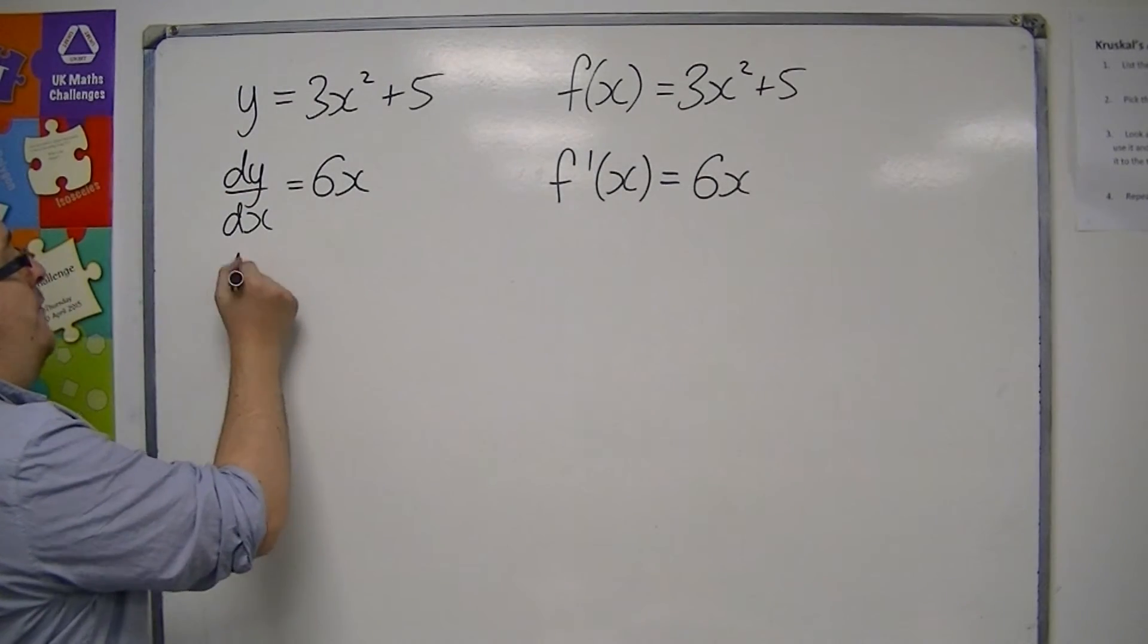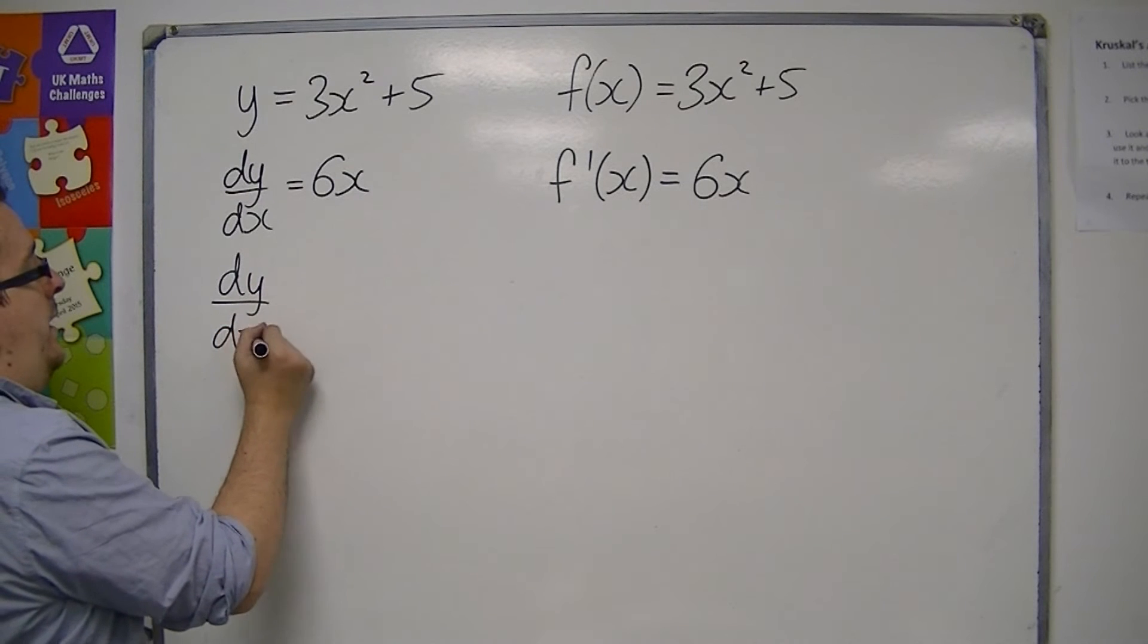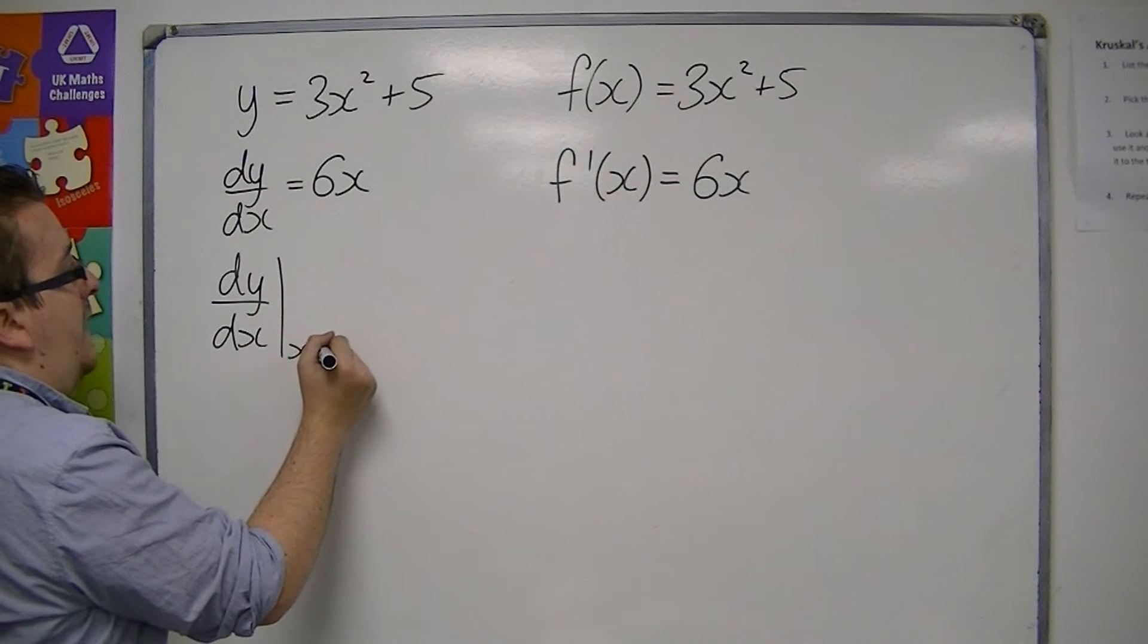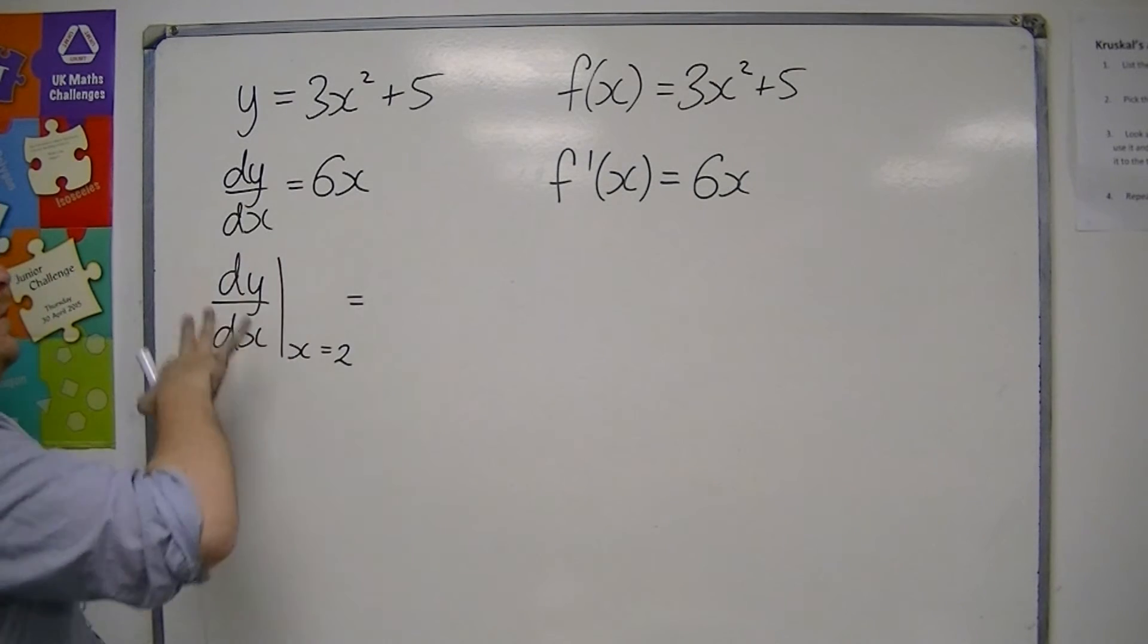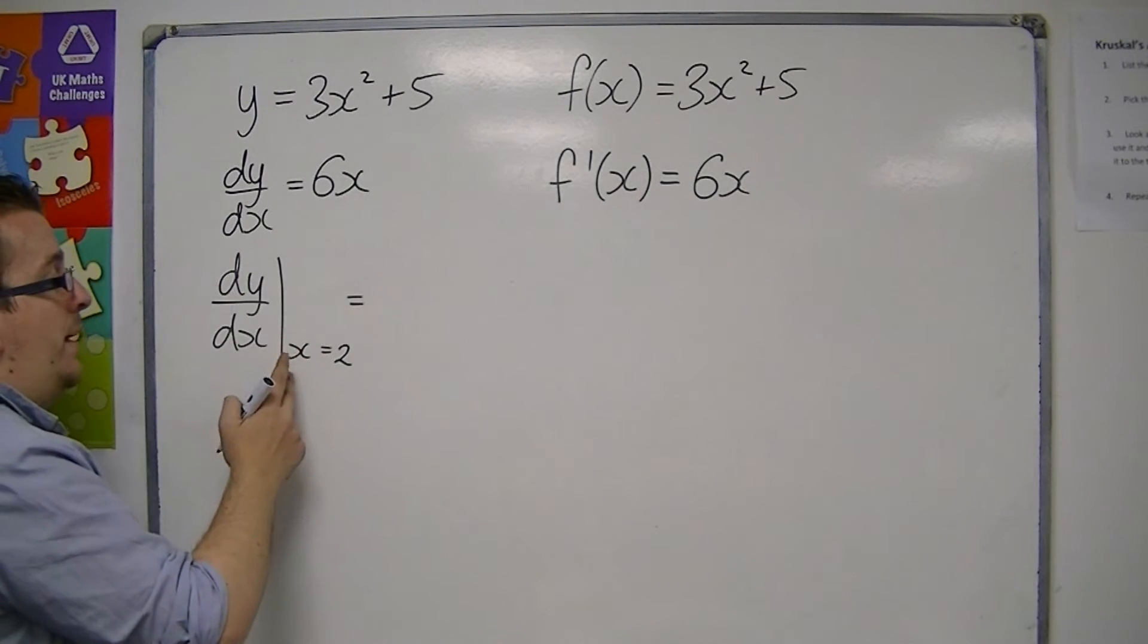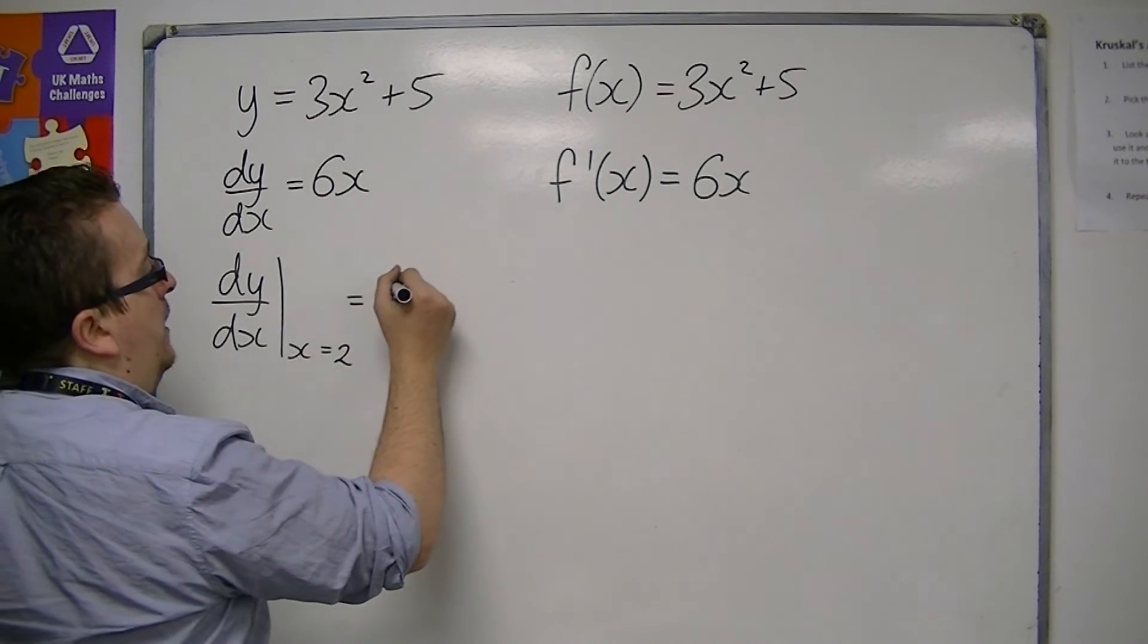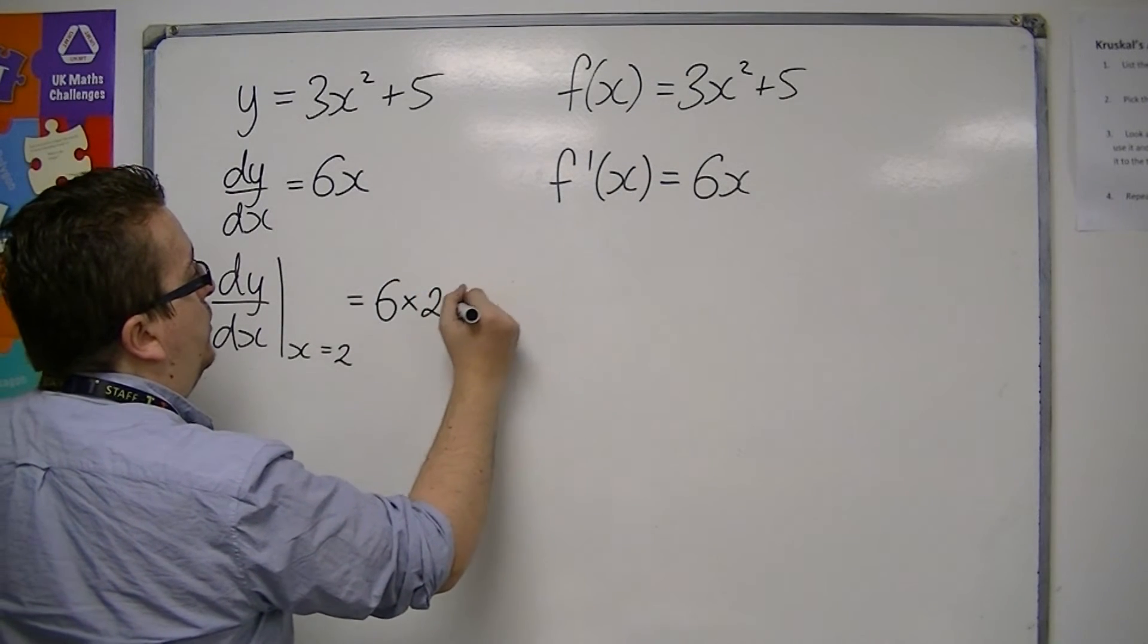If you're going to evaluate the derivative at a specific point, like x = 2, then on the left-hand side here, we can write it as dy/dx evaluated at x = 2. And so this would be 6 × 2, which is 12.